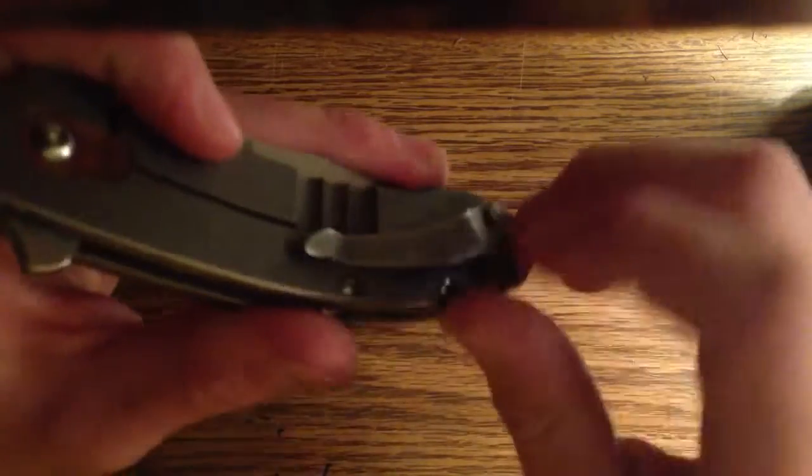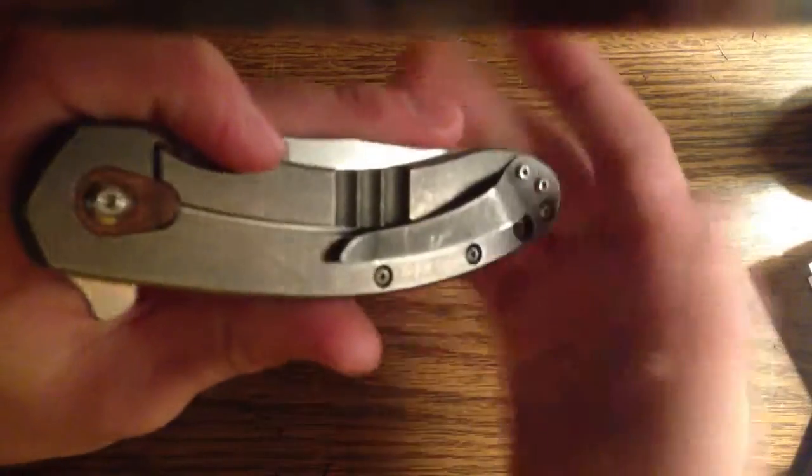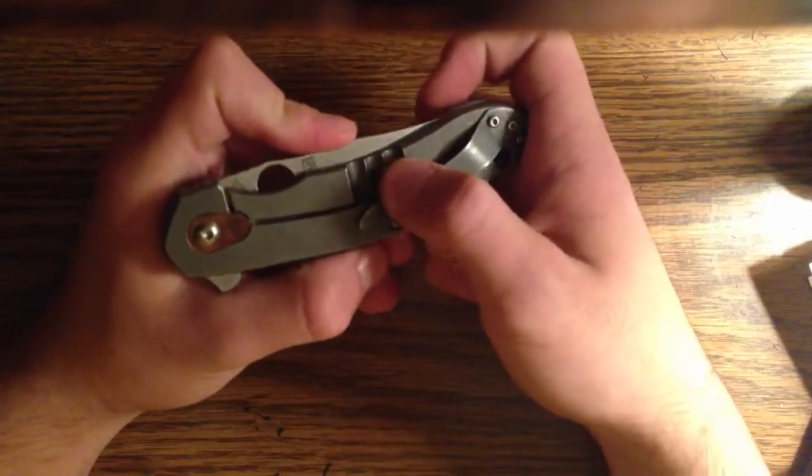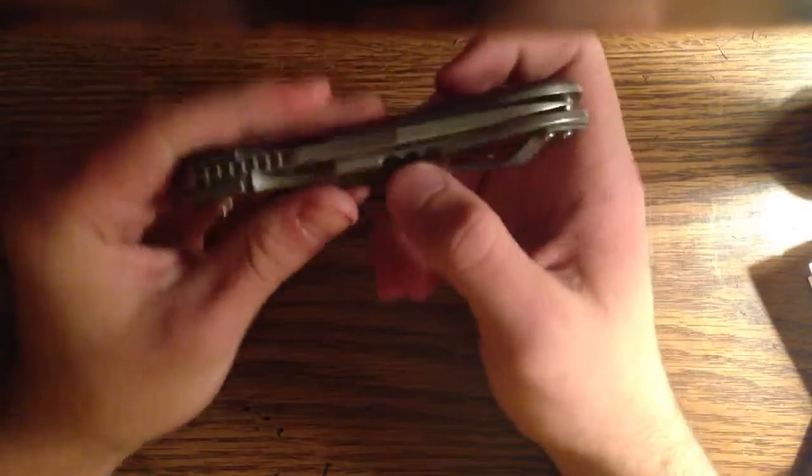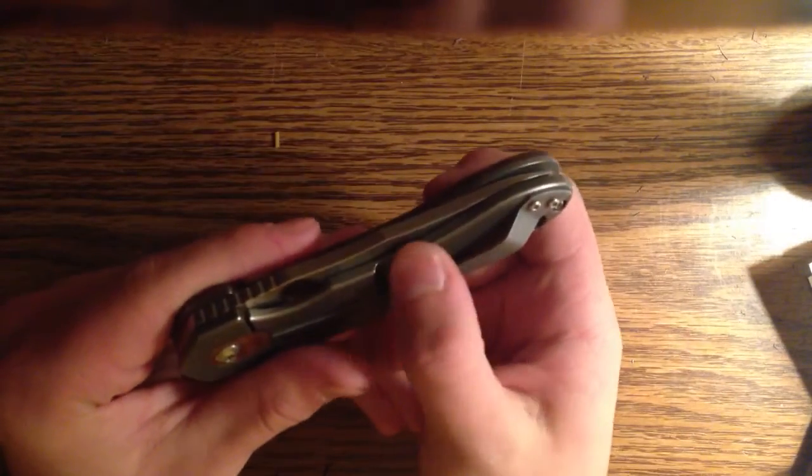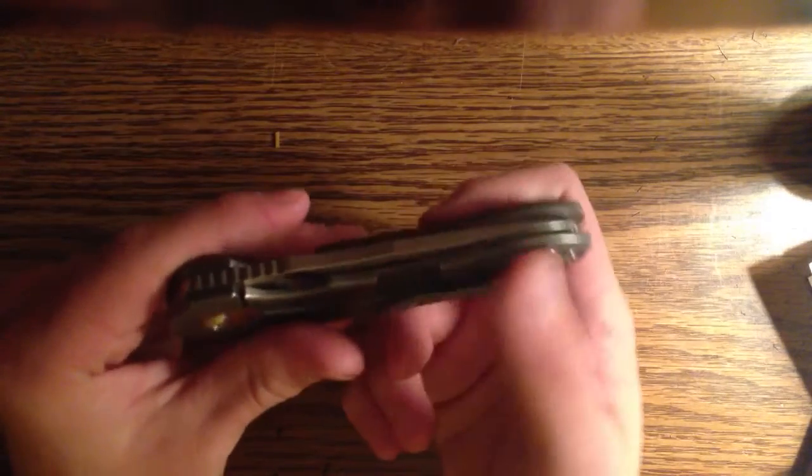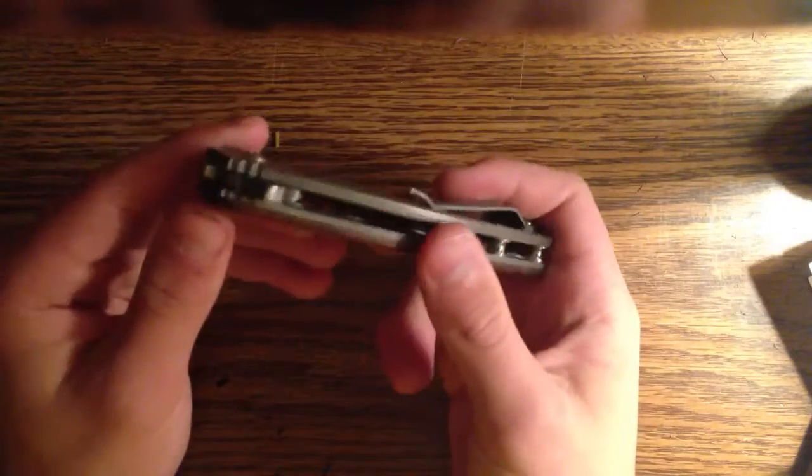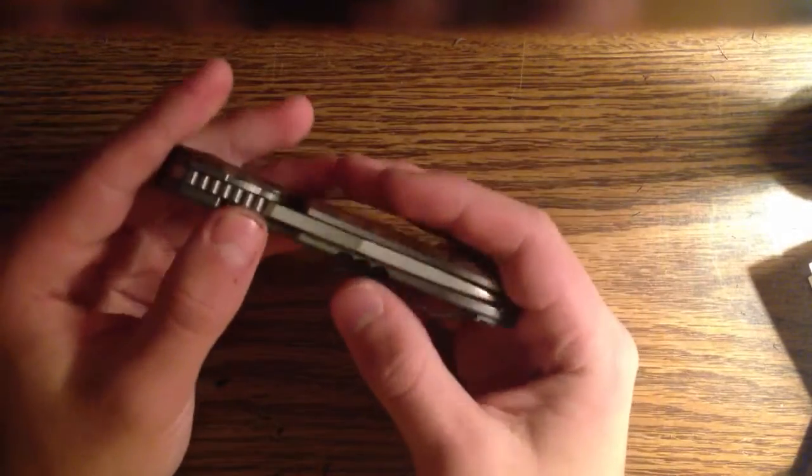First of all, this pocket clip, it doesn't look sharp, but it really is. It's stabbed through my pocket before, and that kind of bugs me. And the angles around it are pretty sharp, too. And then right here on this lock relief, lock bar cutout, it's really sharp on these, and you don't really notice it unless you're flipping it a lot, and that really bugs me.